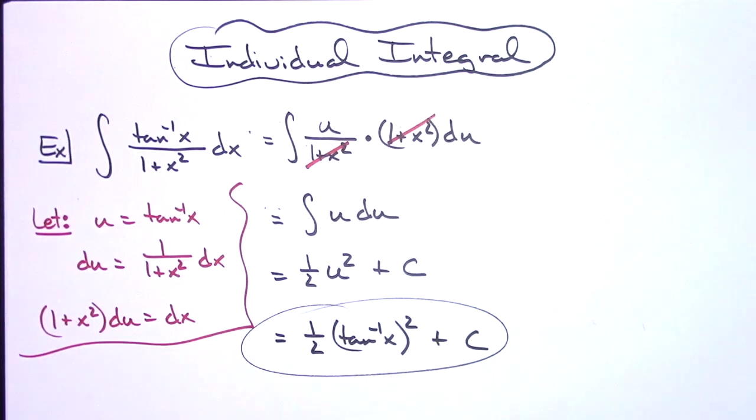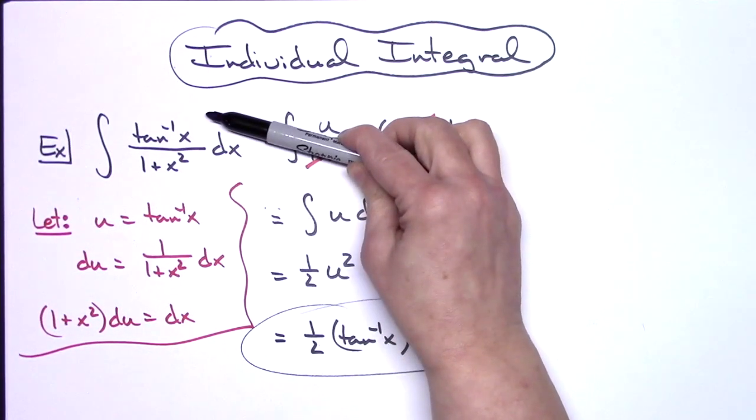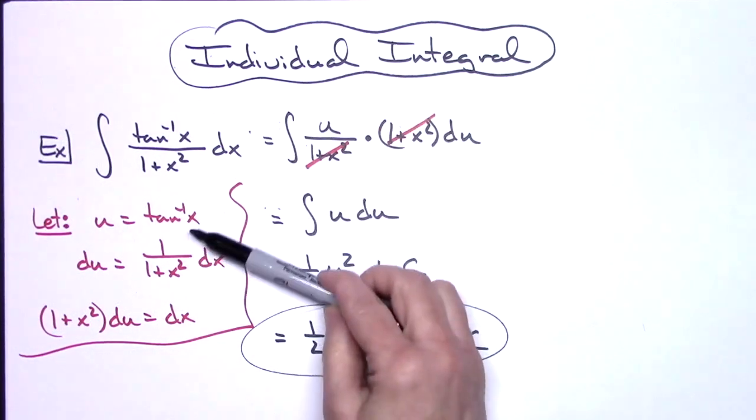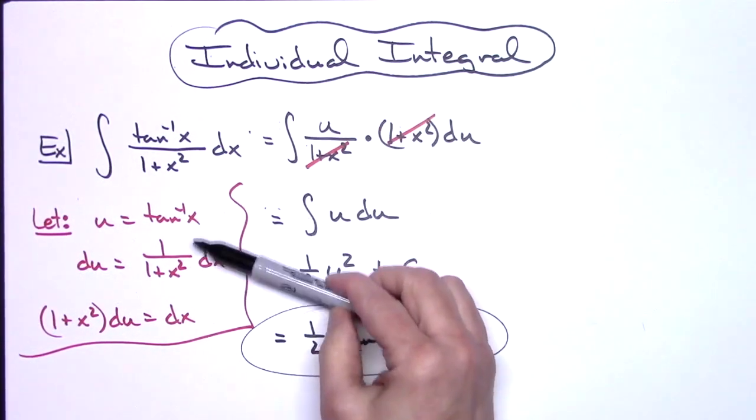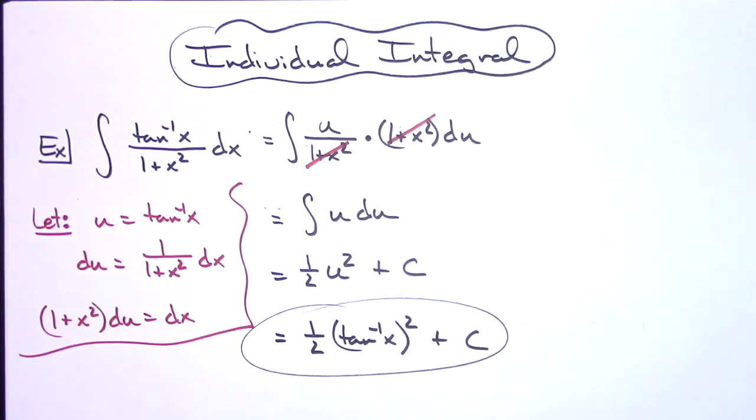So definitely just a straightforward basic u-substitution integral. A little different here is instead of letting that denominator be our u, we had to go with what was in the numerator. And very definitely you've got to have that derivative of those inverse trig functions memorized there to be able to complete this.